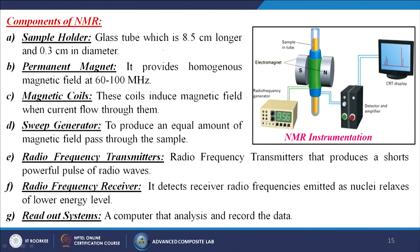Components of NMR include: a sample holder — a glass tube 8.5 cm long and 0.3 cm in diameter; a permanent magnet providing a homogeneous magnetic field at 60 to 100 MHz; magnetic coils that induce a magnetic field when current flows through them; a sweep generator to produce an equal magnetic field through the sample; a radio frequency generator; a radio frequency transmitter that produces short powerful pulses of radio waves; a radio frequency receiver that detects frequencies emitted as nuclei relax to lower energy levels; and a readout system — a computer that analyzes and records the data.